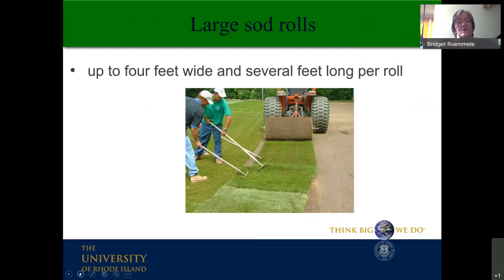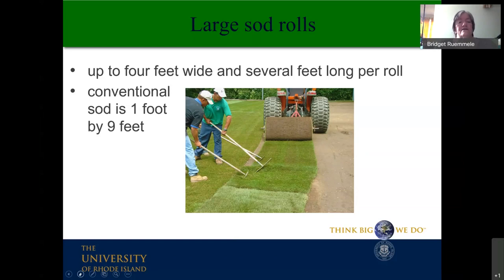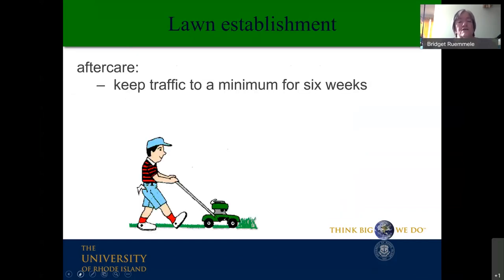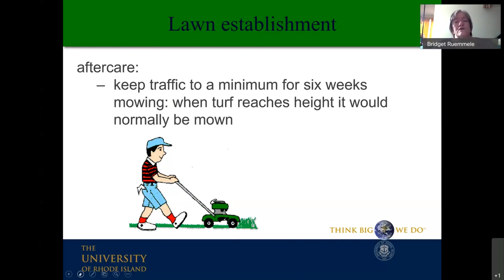If large sod rolls are available — which can be 4 feet wide versus conventional 1-foot by 9-foot rolls — you can get a lawn with very few seams. Once your lawn is established, keep traffic to a minimum for 6 weeks, whether seeded or sodded. Even a sodded lawn needs time to send roots down and adhere to the location. Mow when the turf reaches the height at which it would normally be mown — don't wait until the grass is a foot long.